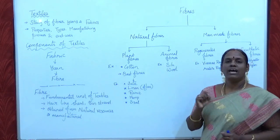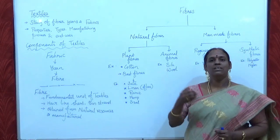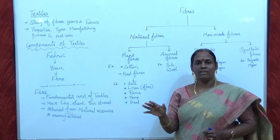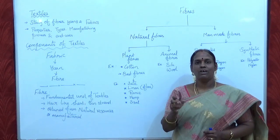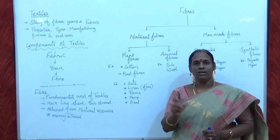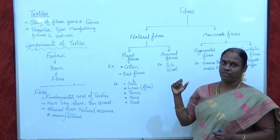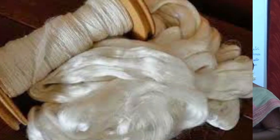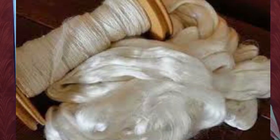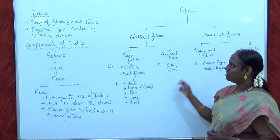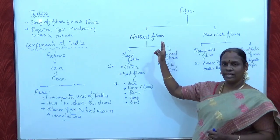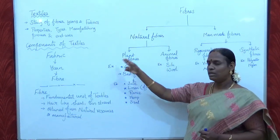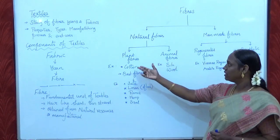Animal fibres are obtained from the skin of animals or the secretion of insects. Examples of animal fibres are silk and wool. So we have discussed about natural fibres — they are classified into plant and animal fibres.